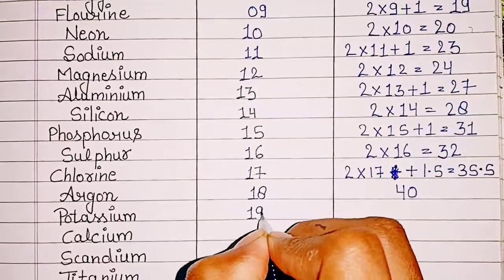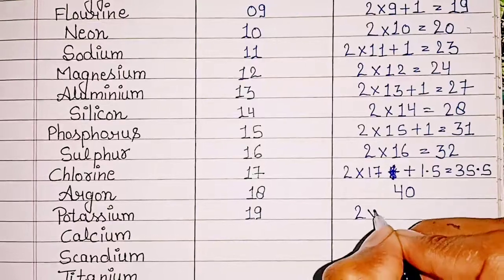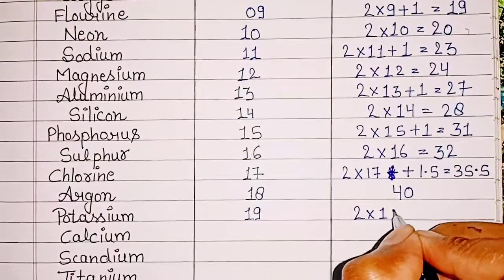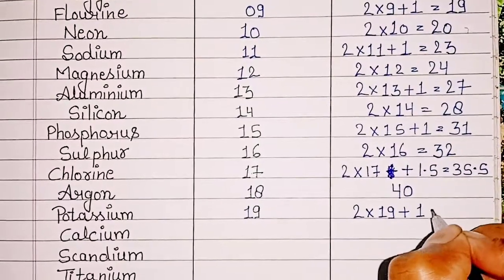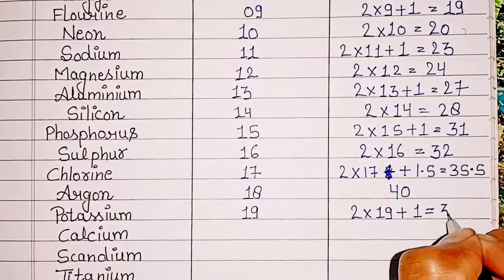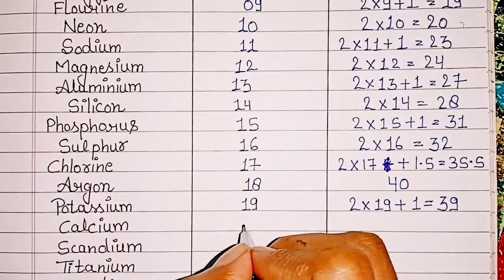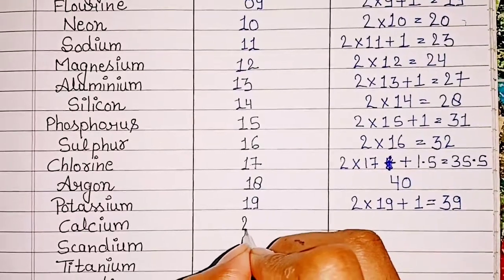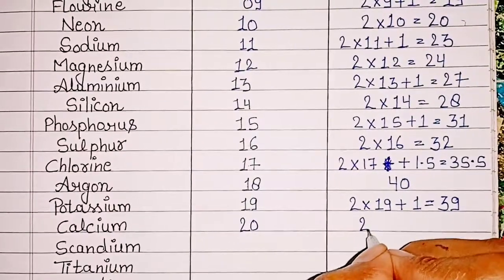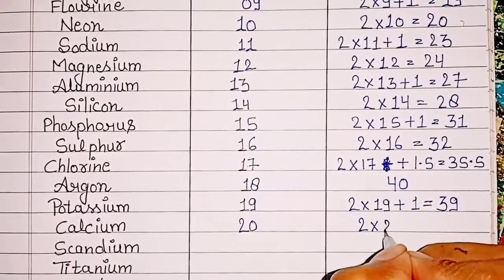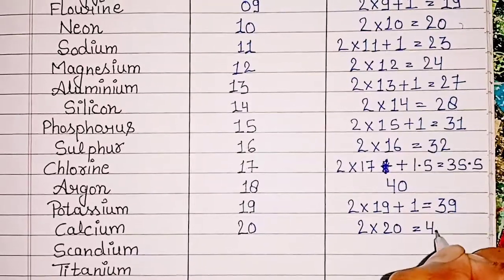Potassium: atomic number 19, mass number 2 x 19 + 1 = 39. Calcium: atomic number 20, mass number 2 x 20 = 40.